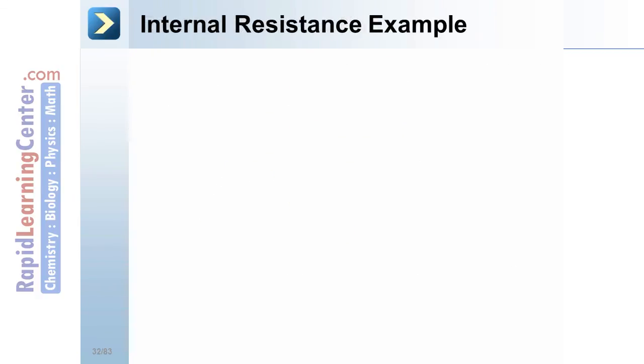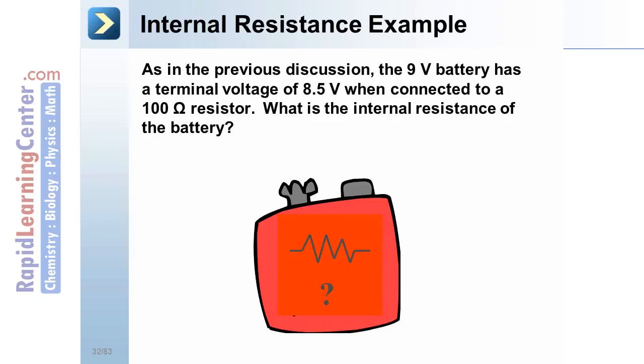Internal resistance example. As in the previous discussion, the 9-volt battery has a terminal voltage of 8.5 volts when connected to a 100-ohm resistor. What is the internal resistance of this battery?